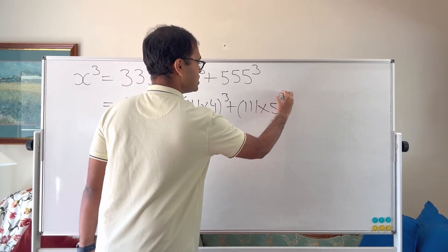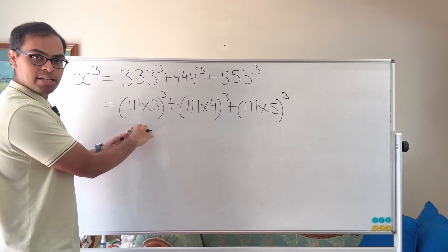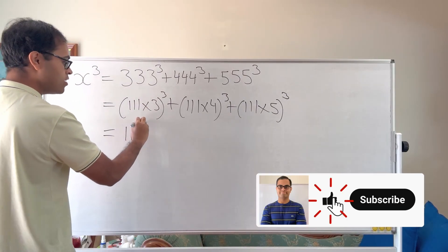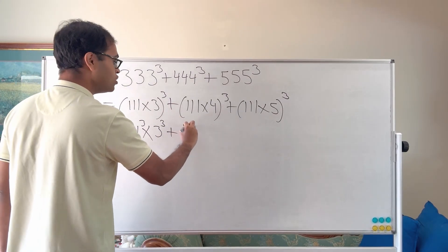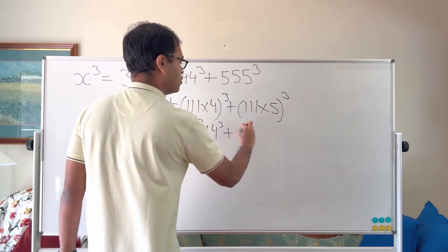So this is going to get super interesting because we've got this. And now if we cube a product, we're multiplying 111 three times and 3 three times. So we can say this is 111 cubed times 3 cubed. We can say this is 111 cubed times 4 cubed, and we can say that this is 111 cubed times 5 cubed.